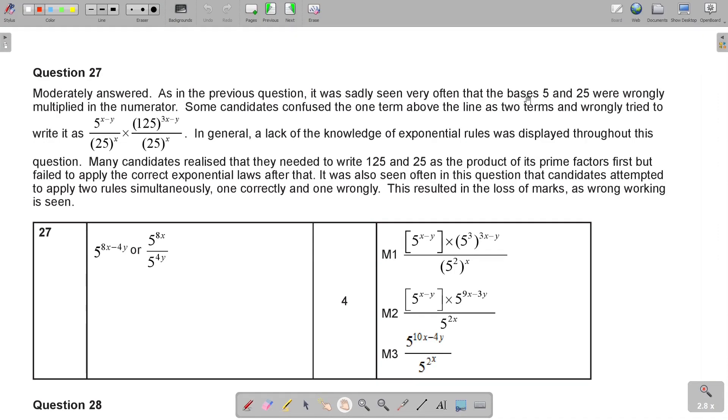It's modestly answered, as in the previous question. It was sadly seen very often that the base 5 and 25 were wrongly multiplied in the numerator. Some candidates confuse the one term above the line as two terms and wrongly try to write it as that incorrect. There's not a plus in between. That's not indices. In general, a lack of the knowledge of exponential rules was displayed throughout this question.